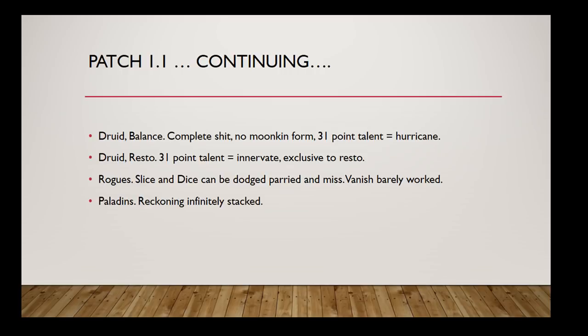Resto got Innervate as their 31-point talent with no Swiftmend. Rogue Slice and Dice couldn't be dodged or parried, and Vanish barely worked. Paladins also had this crazy Reckoning stack — it could go infinitely. I'm sure you've seen the videos of a paladin 4 or 5-shotting Hakkar. This was after Reckoning got stacked up pretty high, after which Reckoning was nerfed very hard in a hotfix right after that.